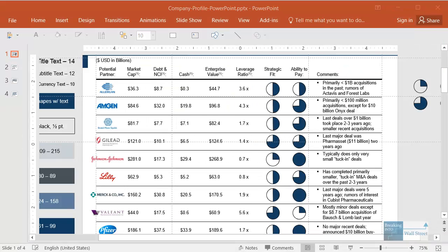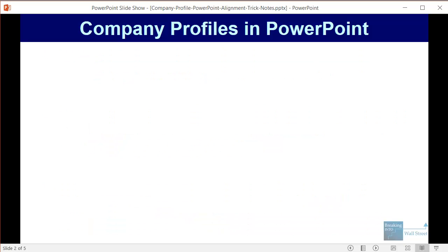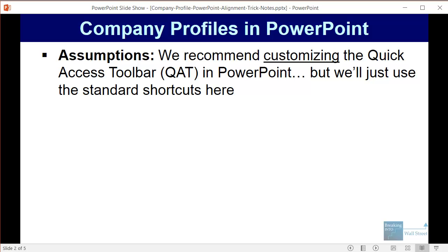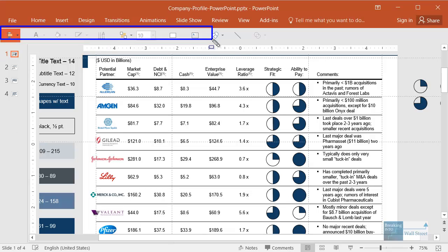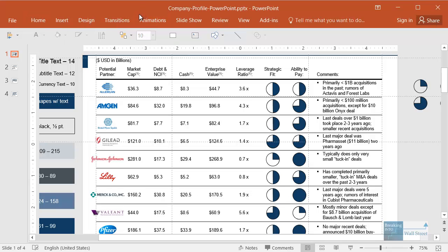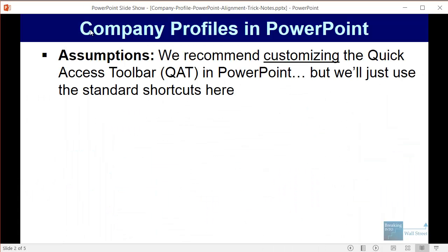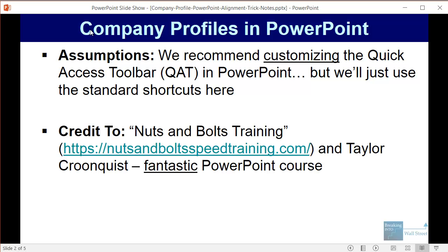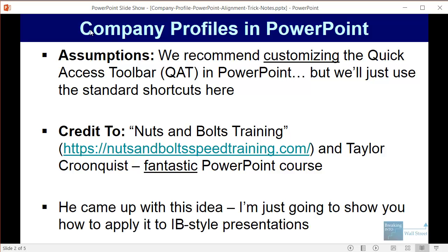Those are a few examples of company profiles. Now in the PowerPoint course we recommend customizing the quick access toolbar. In my version of PowerPoint you can press the Alt key and access many common shortcuts very quickly. However, if you just have the default PowerPoint installed on your computer, you're not going to have this, so we're just going to focus on the standard shortcuts here. Also for this trick, I have to give credit to Nuts and Bolts Training and the creator, Taylor Kroenquist. It's a great PowerPoint course, and as far as I know he came up with the idea I'm about to show you. I'm just going to illustrate how you might apply it to investment banking style presentations.